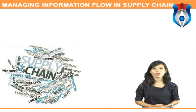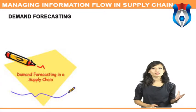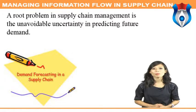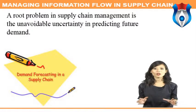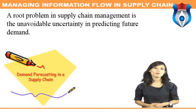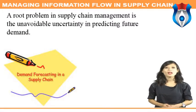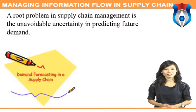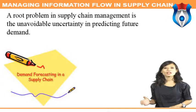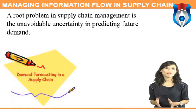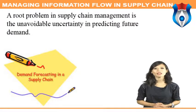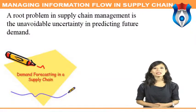SCM is defined as the integration of key business processes from end-user to original suppliers that provides products, services, and information, and hence adds value for customers and other stakeholders. Let us now discuss demand forecasting. A root problem in supply chain management is the unavoidable uncertainty in predicting future demand, which manifests itself in unreliable sales.